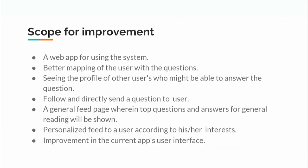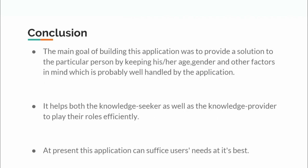Future scope for improvement includes a web app for better system use, improved mapping of users to questions, a follow feature to directly send questions to specific users, displaying profile pictures of users likely to answer, and a personalized feed based on user interests. The main goal of this app is to provide solutions to users by considering age and other factors, helping both knowledge seekers and knowledge providers play their roles efficiently.